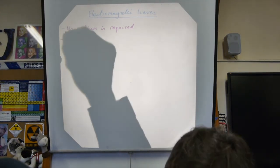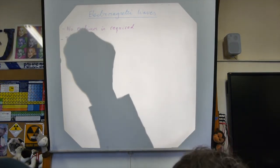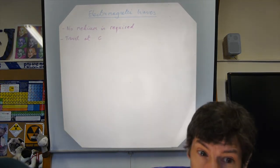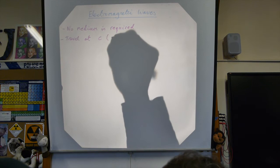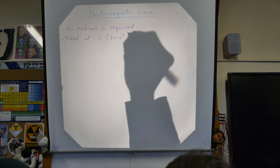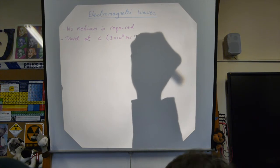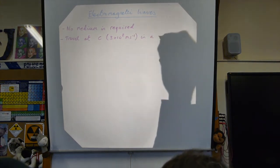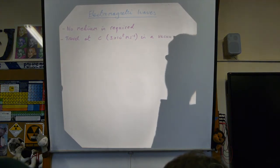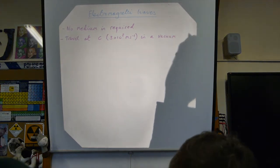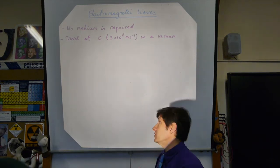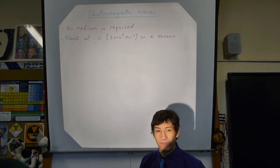If you pass electromagnetic waves through a vacuum, they travel at c — that's a small c, the speed of light — approximately 3 times 10 to the 8 metres per second. That's in a vacuum. About the same in air, but appreciably slower in glass or something like that, which is why we get refraction.